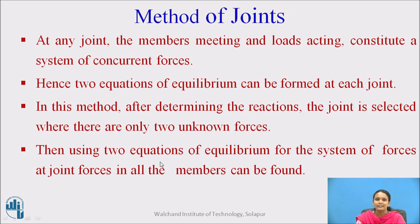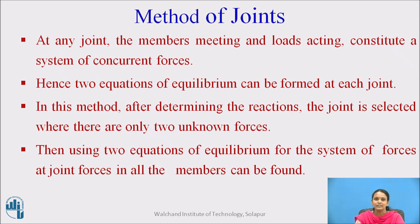Method of joint: at any joint, the members meeting and the loads acting constitute a system of concurrent forces. Whenever forces are acting at a joint, it is called a concurrent force system. Hence, two equations of equilibrium can be formed at each joint. In this method, after determining the reactions, the joint is selected where there are only two unknown forces.